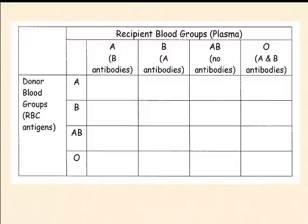If blood type A were to donate to blood type A, we should notice complete compatibility and no clumping. However, if blood type A donated to blood type B, the A antibodies would attack the A antigens on the donor red blood cells and we would see clumping — this is incompatible. If blood type A was to donate to blood type AB, which contains no antibodies, we should see no clumping. And if blood type A was to donate to blood type O, which contains both A and B antibodies, the A antibodies should attack the A antigens on the donor and we would see clumping.